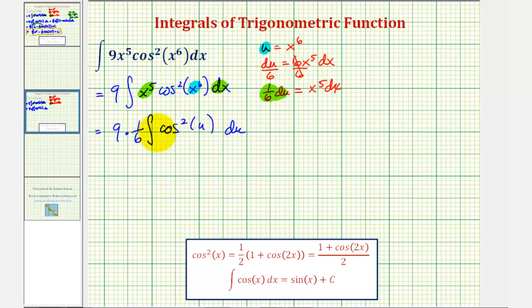Now we've made some progress here, but we don't have an integration formula for cosine squared u. So we'll have to apply the power reducing formula given below, where cosine squared u equals one-half times the quantity one plus cosine two u.